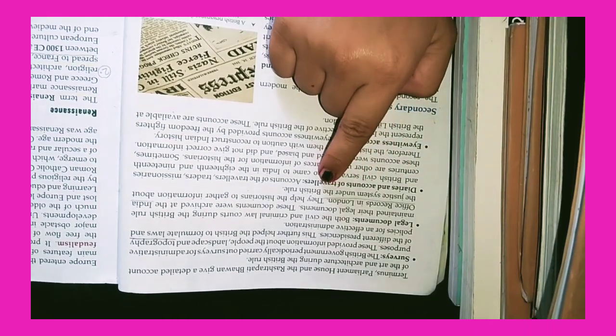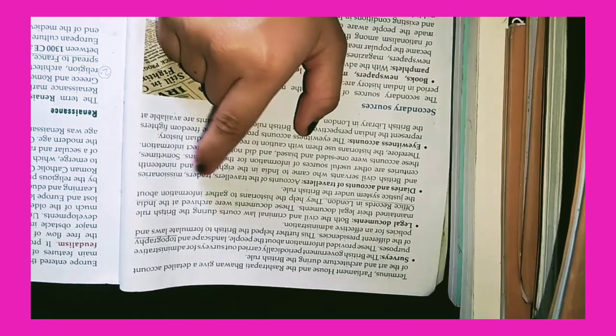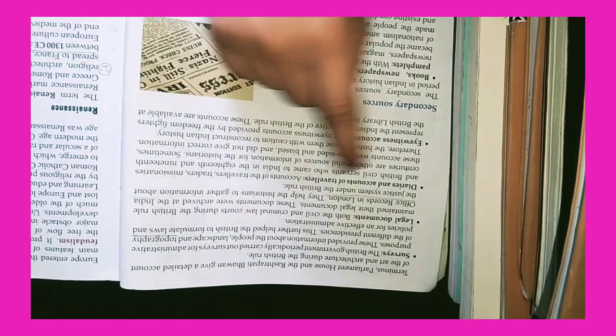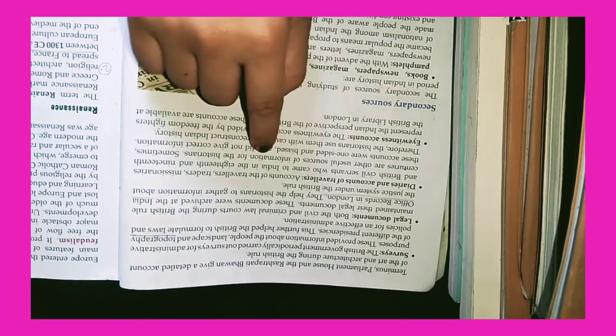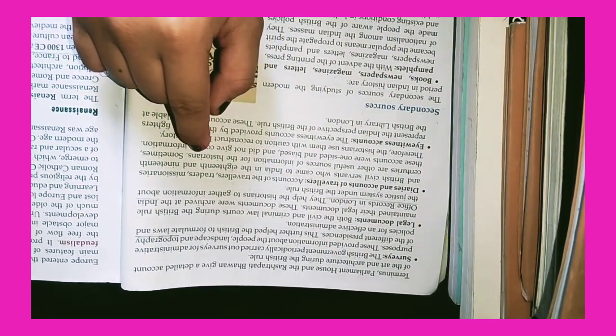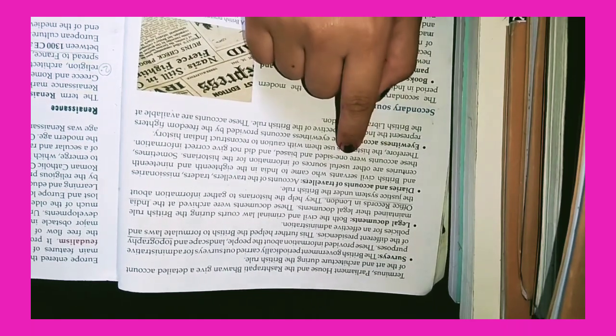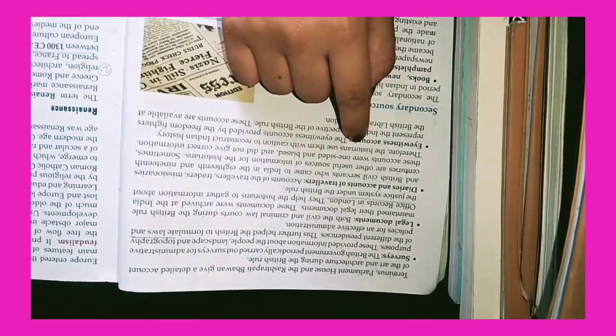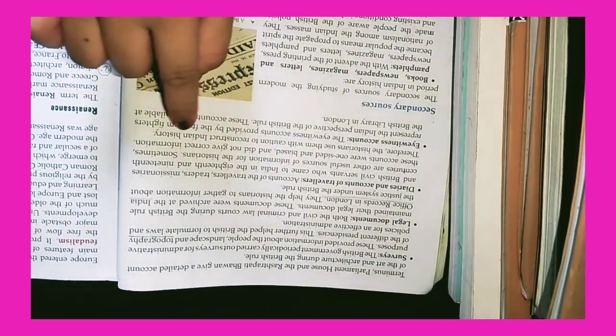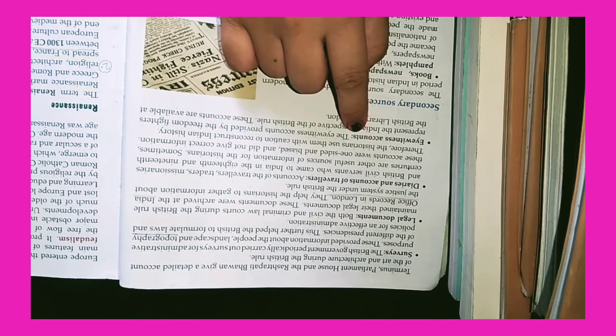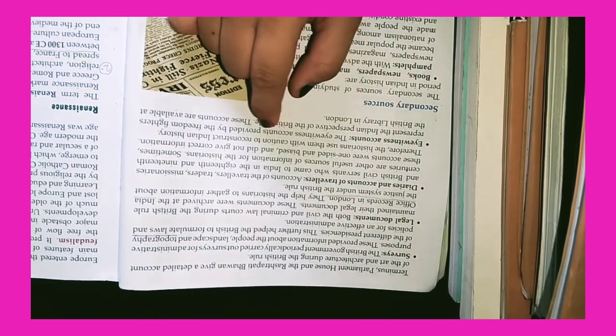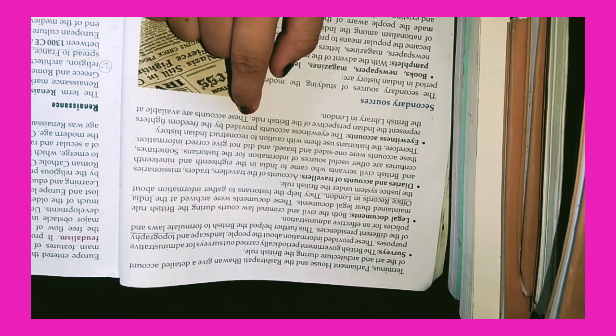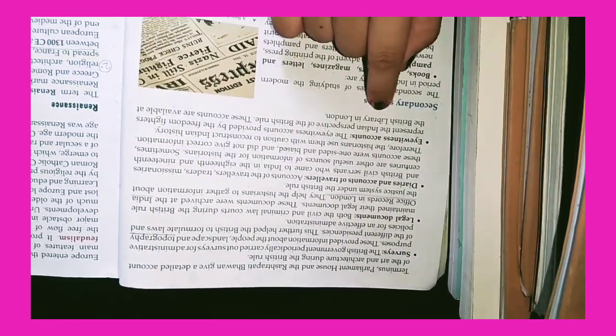Diaries and Accounts of Travellers: Accounts of the travellers, traders, missionaries and British civil servants who came to India in the 18th and 19th centuries are other useful sources of information for historians. Sometimes, these accounts were one-sided and biased and did not give correct information. Therefore, historians used them with caution. Eyewitness Accounts: The eyewitness accounts provided by freedom fighters represent the Indian perspective of British rule. These accounts are available at the British Library in London.